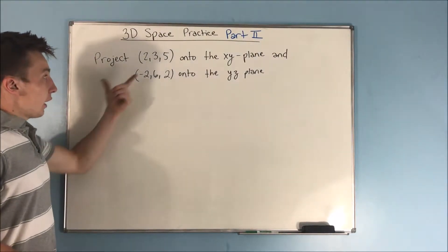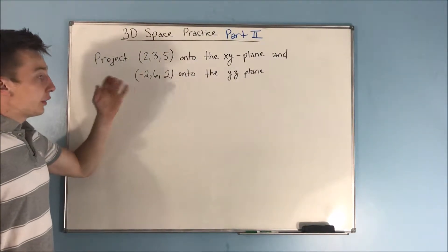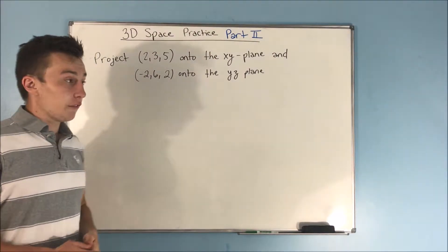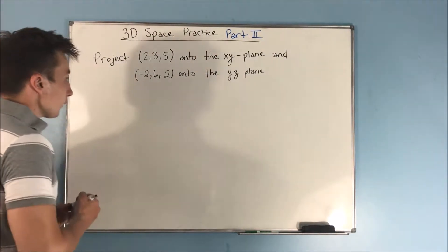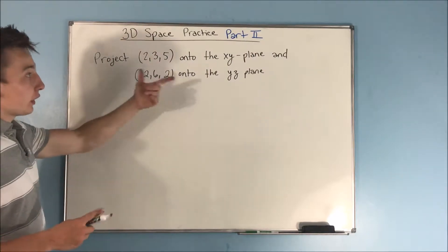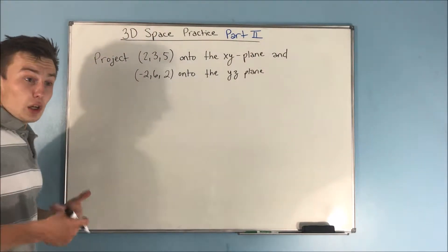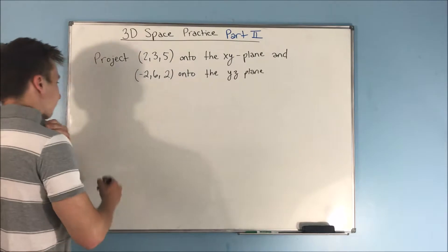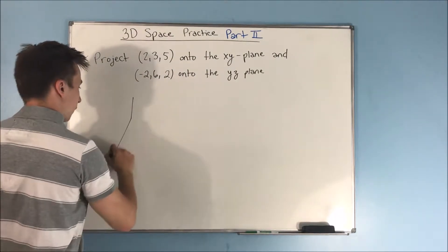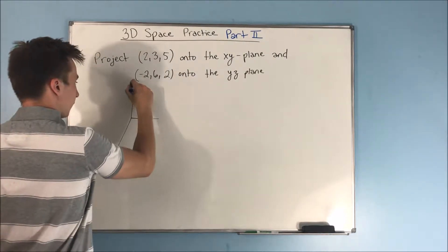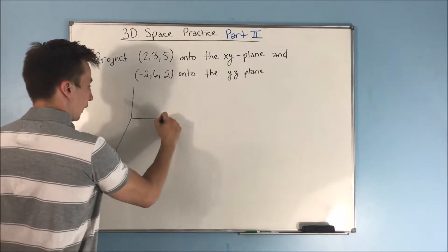We want to project the point (2,3,5) onto the XY plane, and we'll save the other part for next. But if we want to project this point onto the XY plane, first we need to see what this point actually looks like. So let's draw our axes. We got our X, our Y, and our Z.